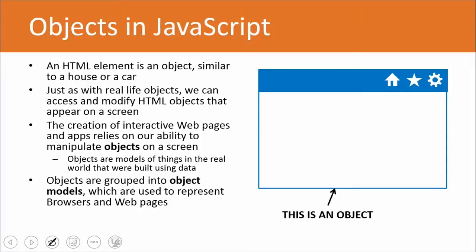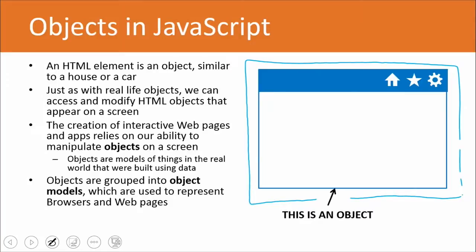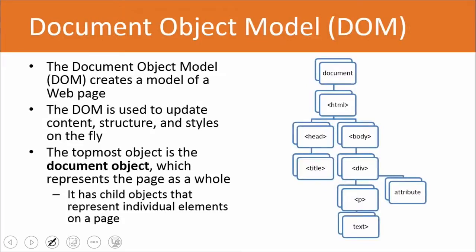These objects that appear on our screen are typically grouped into things called object models, which are used to represent browsers and web pages. And so this whole thing right here is a window object. And everything on the inside of it is part of the document object. And so you'll see that we'll say document.write. We used that in an earlier example. That's what we're referring to when we say document. The document object model creates a model of a web page. And so as I just mentioned, talking about the document object, that's what the document object model refers to. We use it to update content, structure, and styles on the fly. And this guy right here is super important for us. We're going to reference that a lot, especially in these next couple of examples.